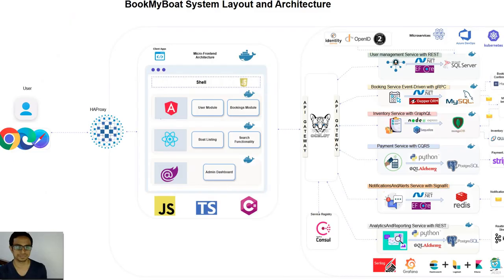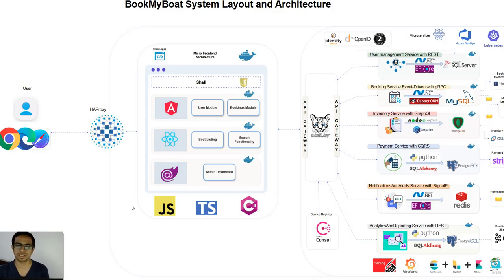So let's get started. The Book My Boot system layout and architecture will be like this, wherein a user comes to the application and connects through a reverse proxy which is hosted on HAProxy. This HAProxy will relay the request to the client applications, which are developed in multiple technical stacks.